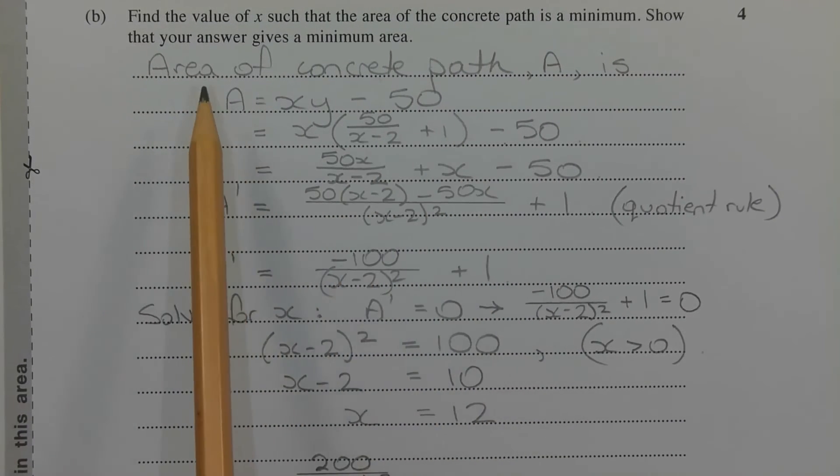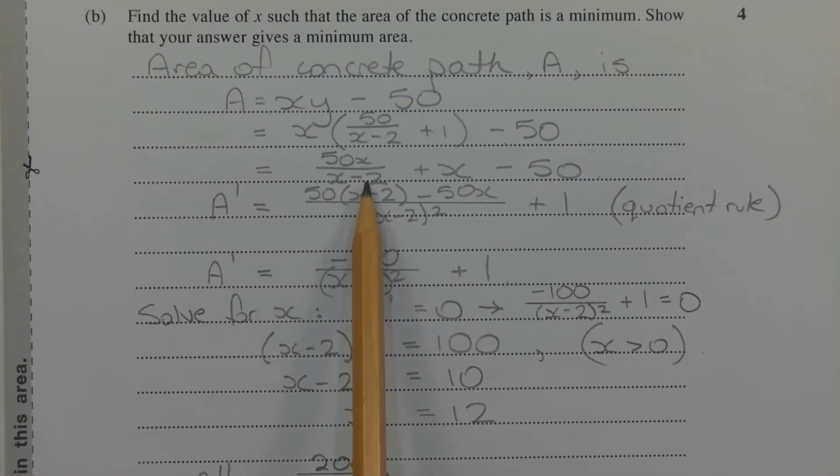Expanding the brackets, we get A is equal to 50x over x minus 2 plus x minus 50.